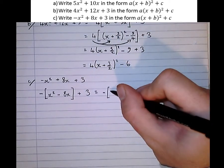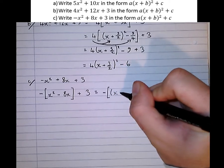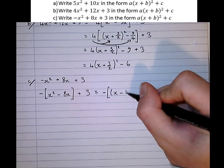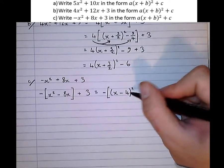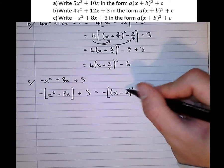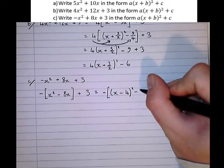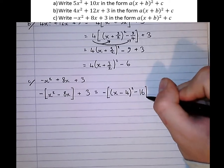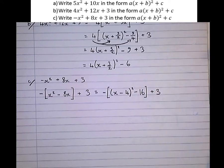And complete the square for what's in the bracket. x minus and half of 8 is 4, squared. When we square this term, we'll end up with plus 16 too many. So we take that 16 away. And the plus 3 bolted on the end.